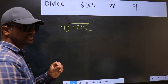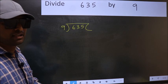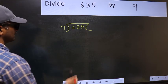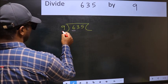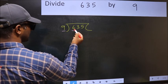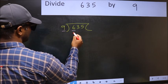This is step 1. Here we have 6 and here 9. 6 is smaller than 9, so take two numbers: 63. When do we get 63 in the 9 table? 9 times 7 equals 63.